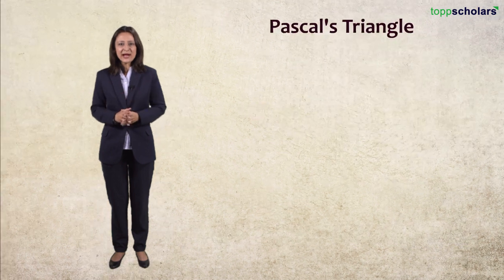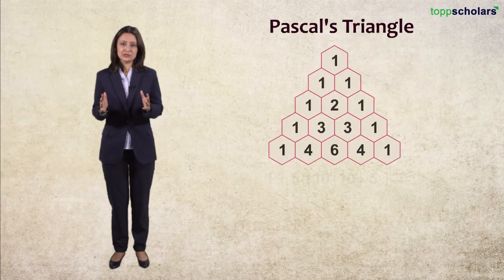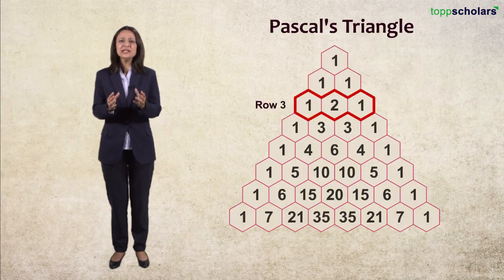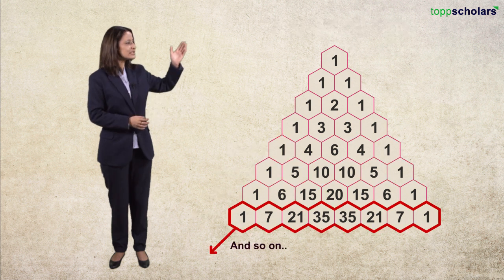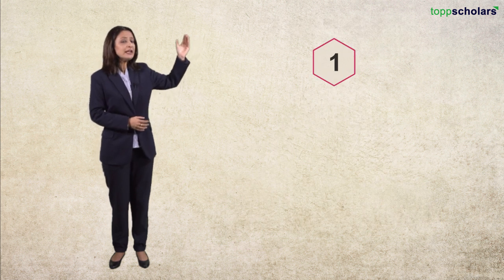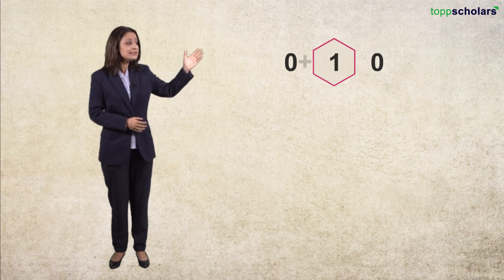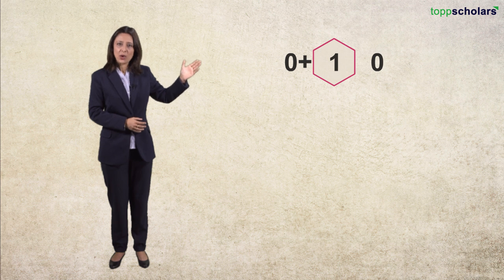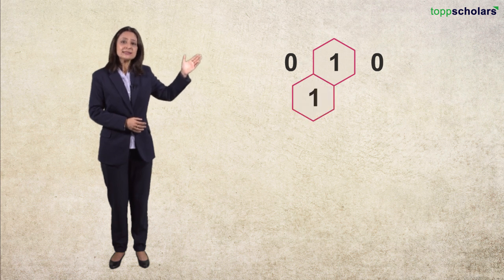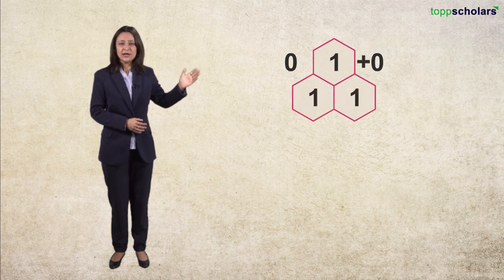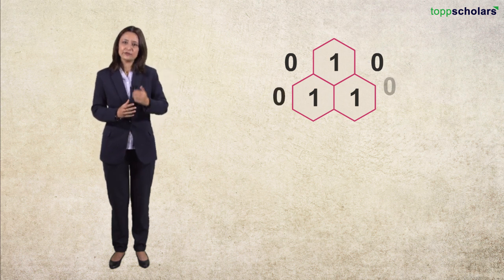Pascal's Triangle consists of many rows and each row has a unique pattern. The first row starts with 1. Now imagine two invisible 0s beside it. The next row, you need to add 0 and 1 to make 1, and then 1 and 0 to get another 1. Always put two imaginary 0s at the start and end of each row.